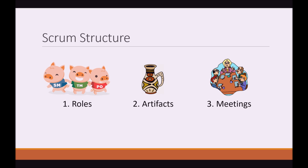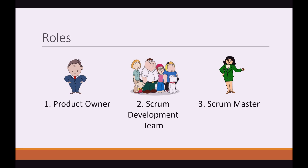Scrum structure. Scrum is made up of roles, artifacts, and meetings. Let's first discuss roles. We have a product owner, a Scrum development team, and a Scrum master.